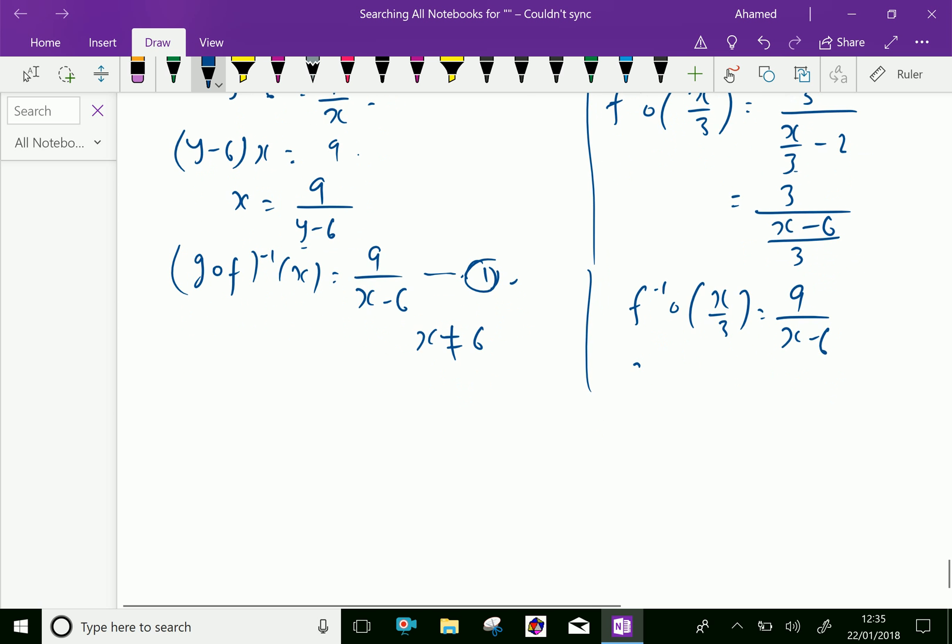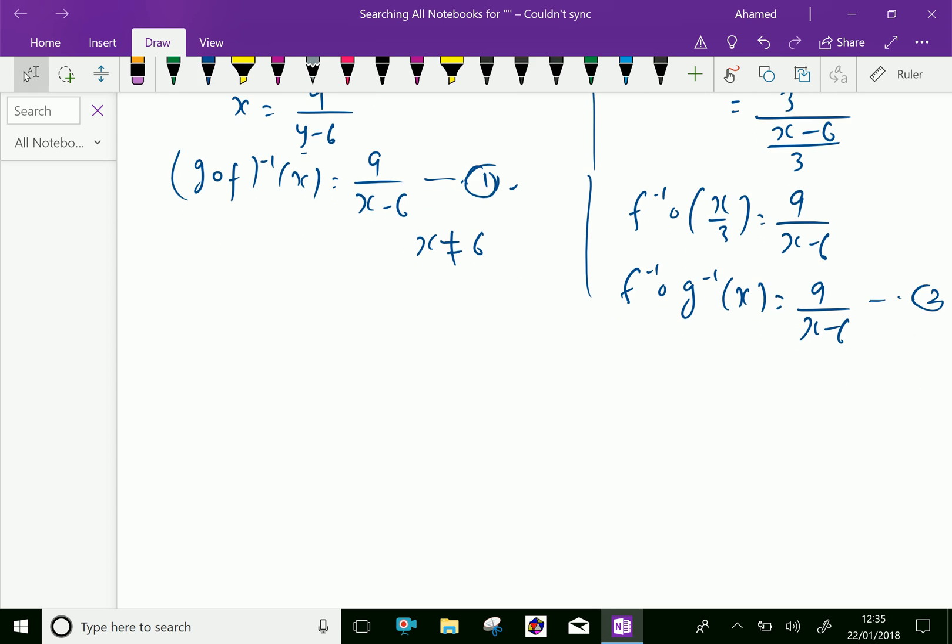Means f inverse of g inverse x is equal to 9 over x minus 6. Put this as 2, from where x is not equal to 6.